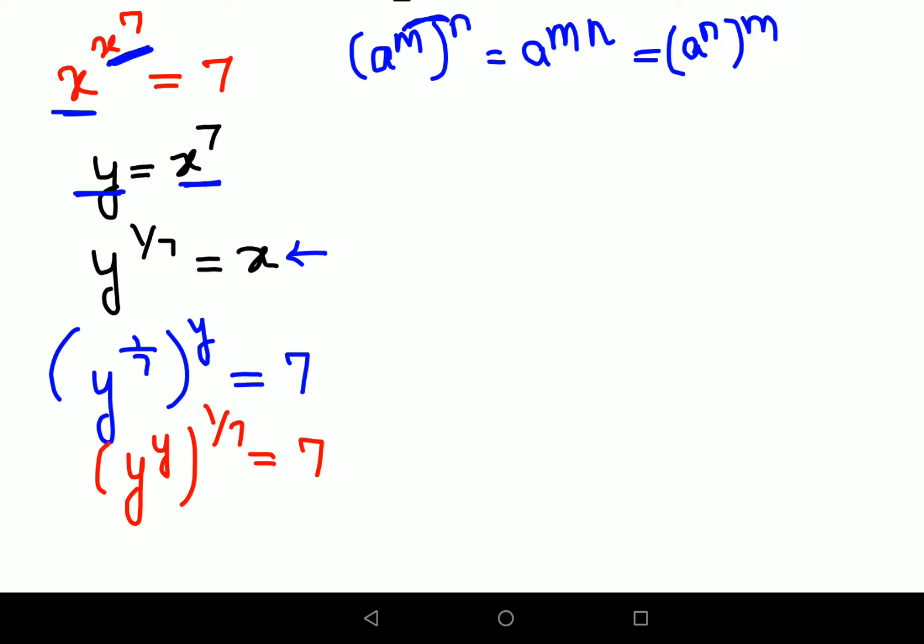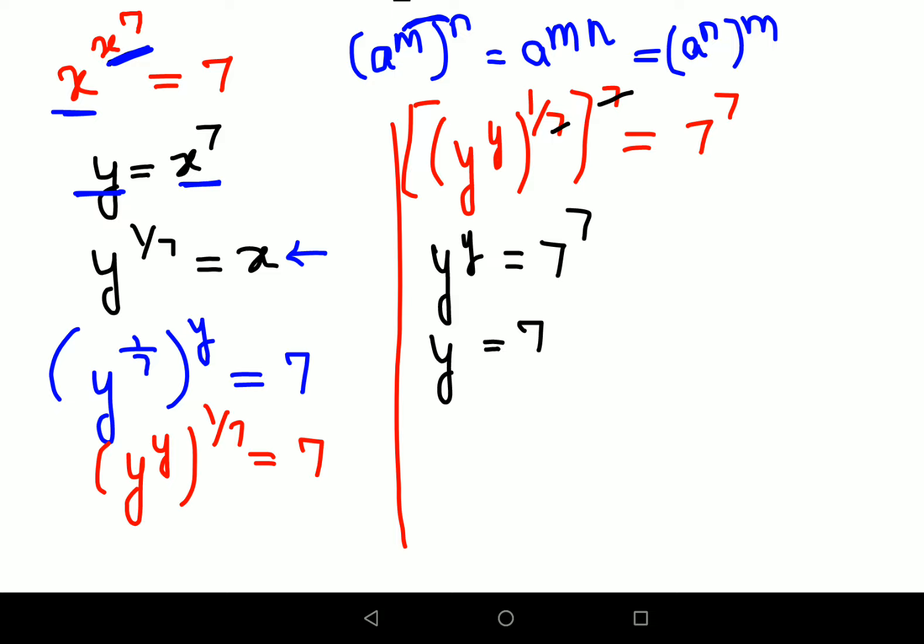In order to find the value of y, we will take the seventh power on both sides. This becomes 7^7, and the 7s in the exponent cancel out. So we get y^y = 7^7, and from here y = 7.